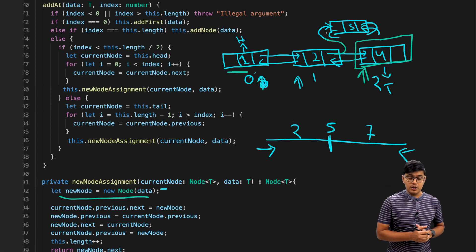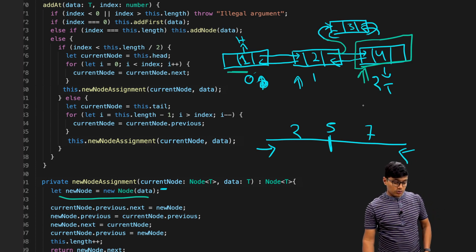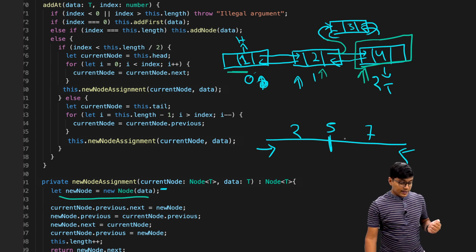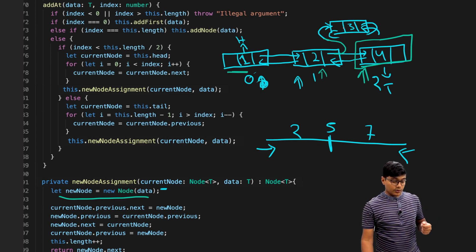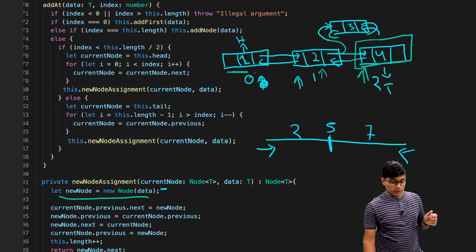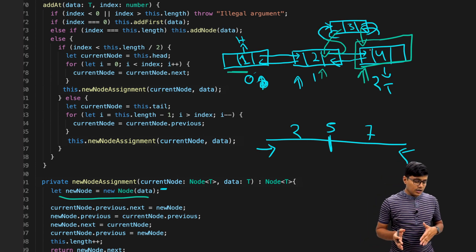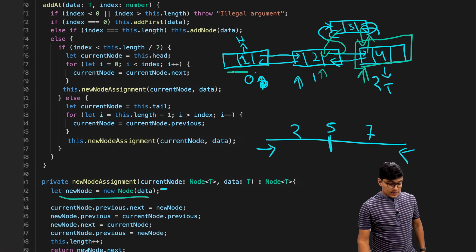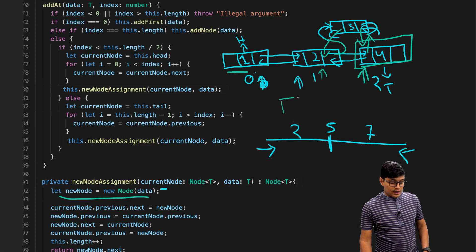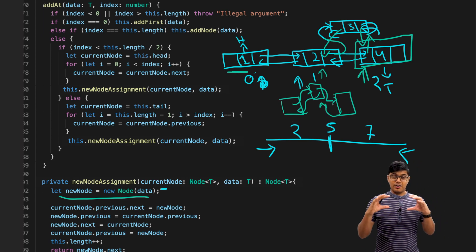Inside the private method: currentNode.previous.next — meaning node 2's next — is set to the new node. Then newNode.previous is set to currentNode.previous, which is node 2. Then newNode.next is set to the current node (4). Finally, currentNode.previous is set to the new node. This correctly inserts node 3 between nodes 2 and 4, as explained in the diagram.